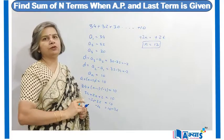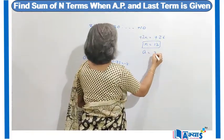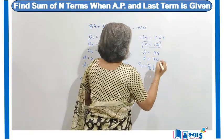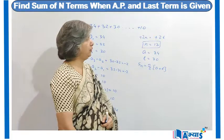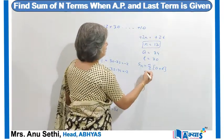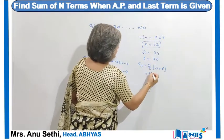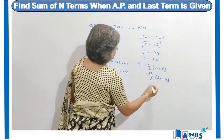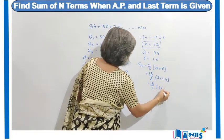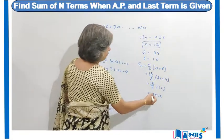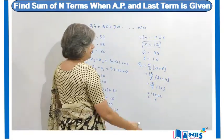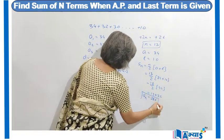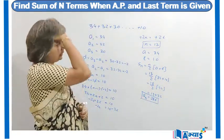We know the value of the last term L = 10 and the first term A = 34. So we use the formula Sn = n/2 × (A + L). With n = 13, A = 34, and L = 10: Sn = 13/2 × (34 + 10) = 13/2 × 44 = 13 × 22 = 286. So Sn = 286 when the first term is 34 and the last term is 10.